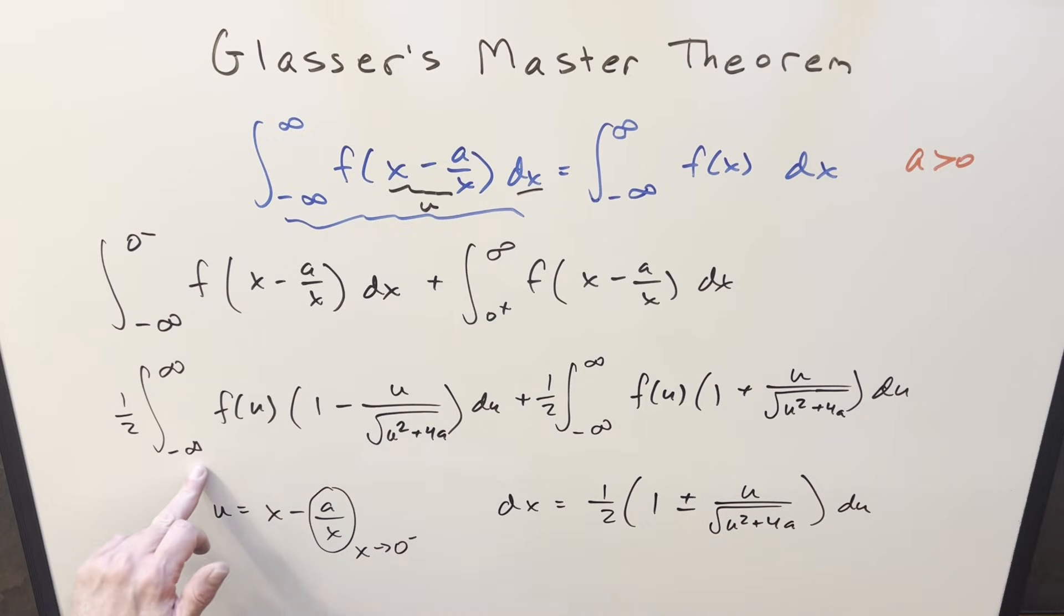But now notice what happened. We've got the same bounds on each of these integrals now. We also have the same constant in front, so I can factor the one half out in front of the whole thing. And then now with the same bounds, I can just bring all these together and kind of add up all the terms. Let's just see what it looks like under one integral.